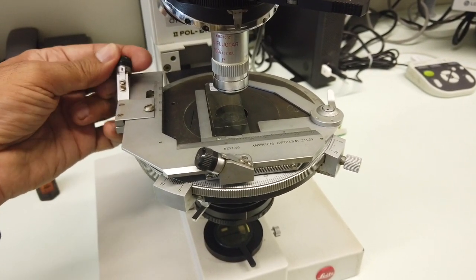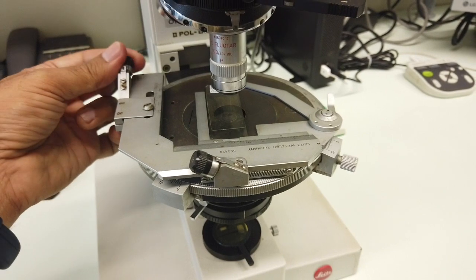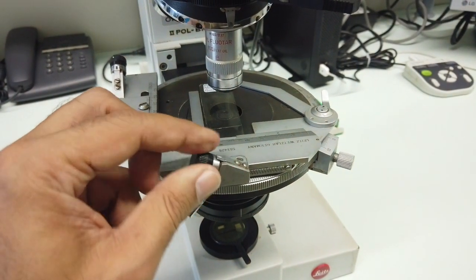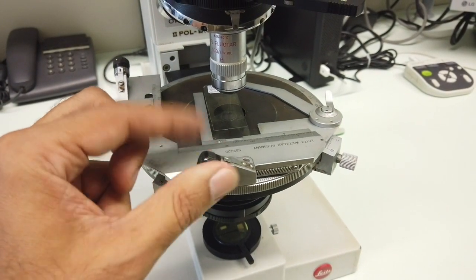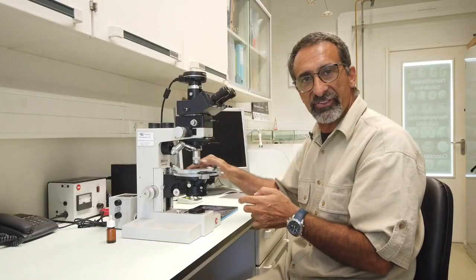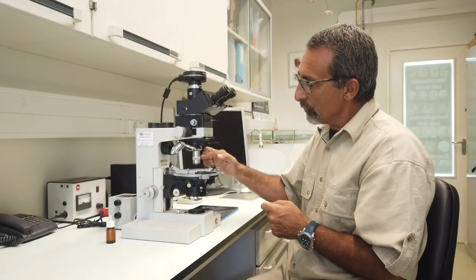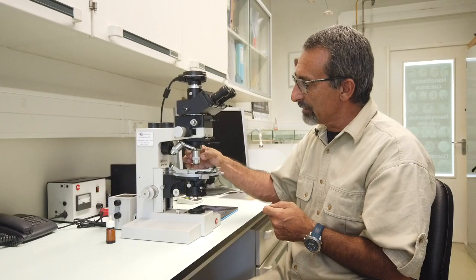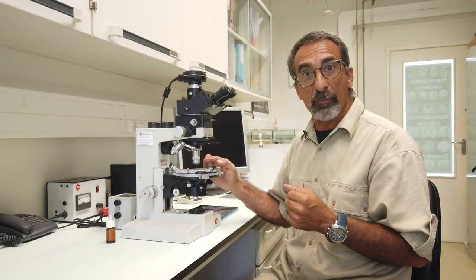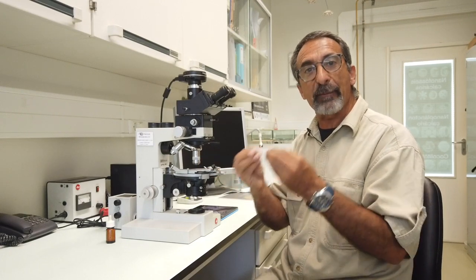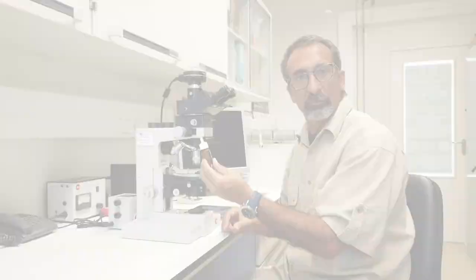It would be very easy to lose our objective, our calcareous nanofossils under observation. So we need an overstage for translational movements over a rotational stage. Then we have an objective, an objective that magnifies 100 times. 100 times is what we normally use in our calcareous nanoplankton observations. We need a special objective that is adapted to use immersion oil and also adapted to polarize light.